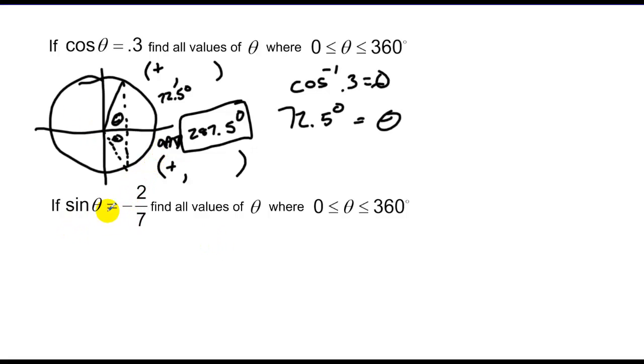Lastly let's do this one. We've got a sine value of negative 2 sevenths. Where will that exist? Well again we're going to take this circle, find a y value of negative 2 sevenths, which would be a negative y somewhere down in the fourth quadrant and also somewhere down in the third quadrant.